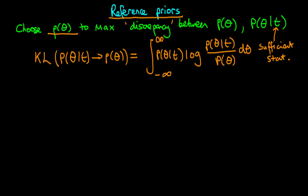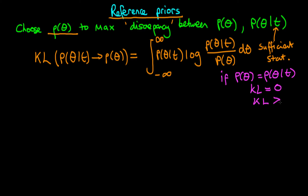What is the motivation for maximising the discrepancy between the prior and the posterior? Well, the idea is that if the posterior looks nothing like the prior, then presumably the posterior is reflecting the data rather than the prior, and hence in some sense our prior is having the least possible effect on our inferences. Just to give a feel for how the Kullback-Leibler divergence works: if our posterior actually equals our prior, then the ratio equals one, log of one is zero, and hence the Kullback-Leibler divergence is zero — a minimum. For all other priors, the Kullback-Leibler divergence is greater than zero.